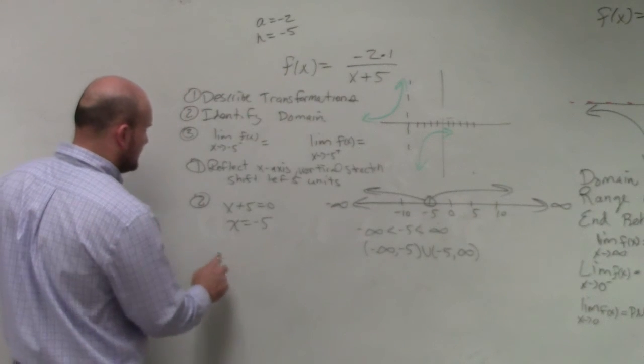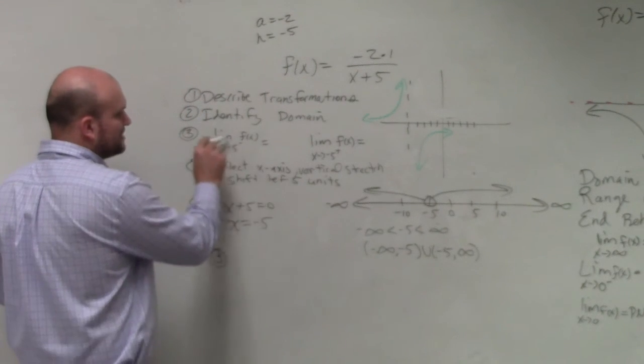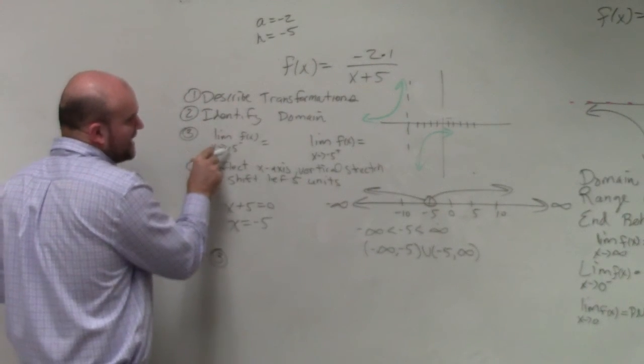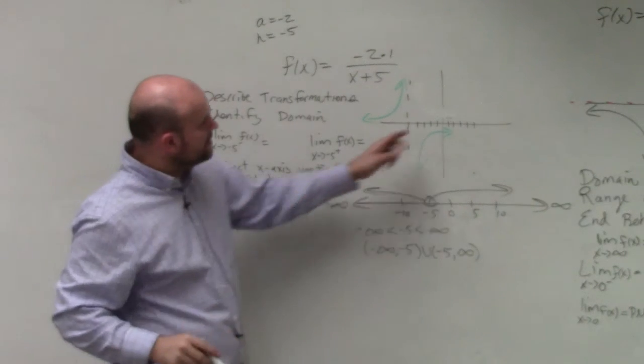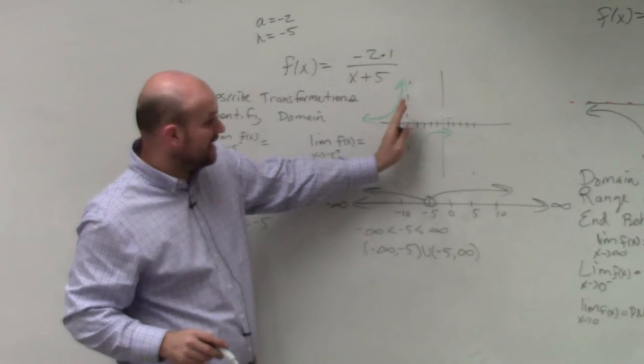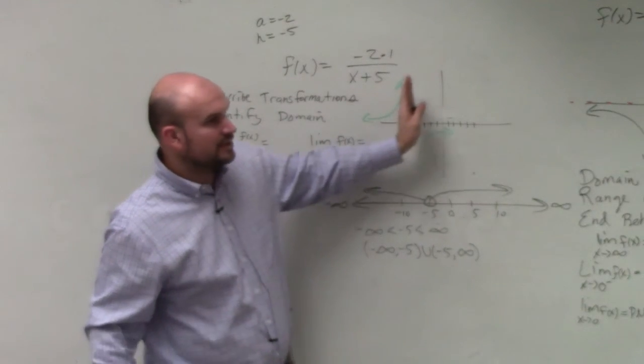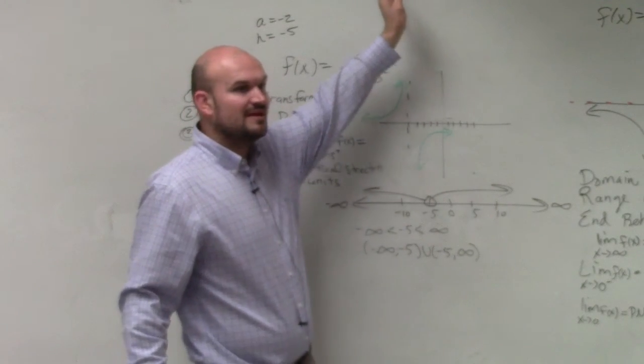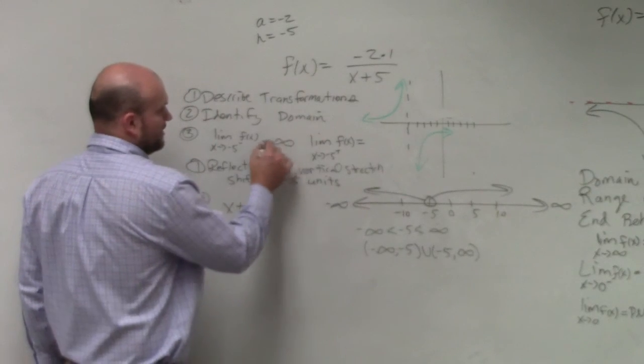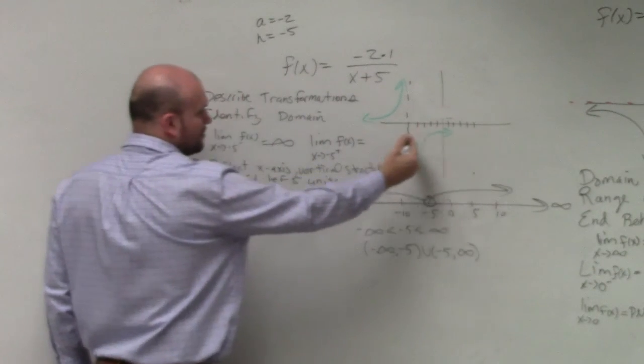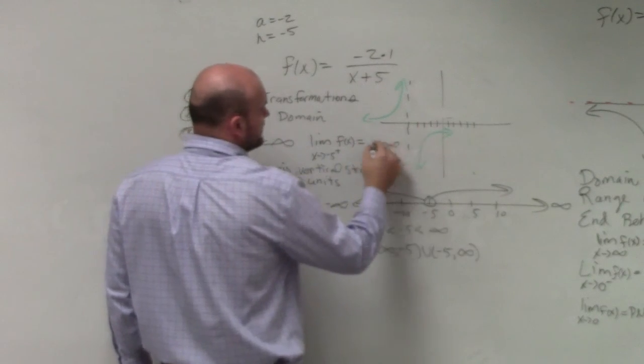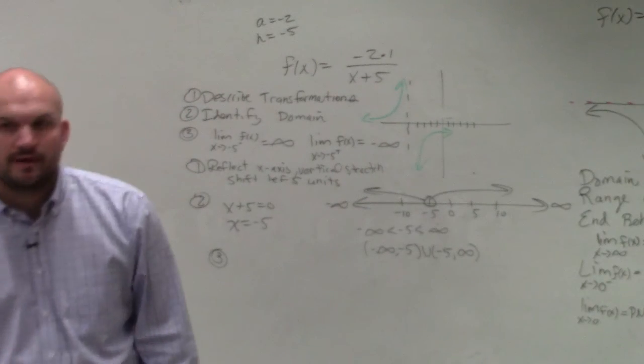And then last but not least, we need to identify our limits. So this is saying the limit as x approaches -5 from the left. So here's -5. We need to approach it from the left, because that little negative up there signifies from the left. So as we're going from the left, we're approaching infinity. And from the right, we're now approaching negative infinity. And there you go.